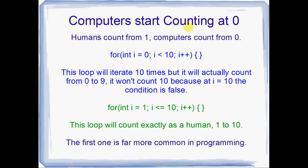This is something to be really aware of. Computers start counting at zero. Human beings start counting from one. So you'd usually write this as a for loop, for int i equals zero, while i is less than ten, i plus plus. That's going to iterate through the loop ten times, but it's actually going to count with i from zero to nine. It won't execute the body of the loop when i is ten, because i is less than ten isn't true when i equals ten. If you ever need to get a for loop to count exactly the way a person does, you'd say something like for int i equals one, while i is less than or equal to ten, i plus plus. That'll count the same as a person, but the first one's far more common.